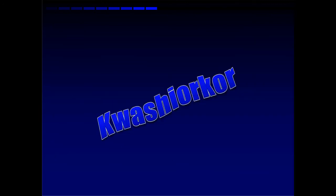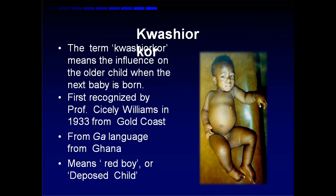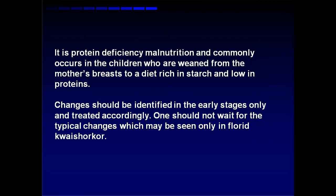Let us go with Kwashiorkor. The term Kwashiorkor means the disease of the older child when the next baby is born — the mother stops breastfeeding the older child, leading to malnutrition. It was first recognized by Professor Cicely Williams in 1933, and later termed Kwashiorkor based on the Ghana language. It also means 'red boy' or 'deposed child' because of the skin changes. It occurs when there is protein deficiency with adequate energy intake.